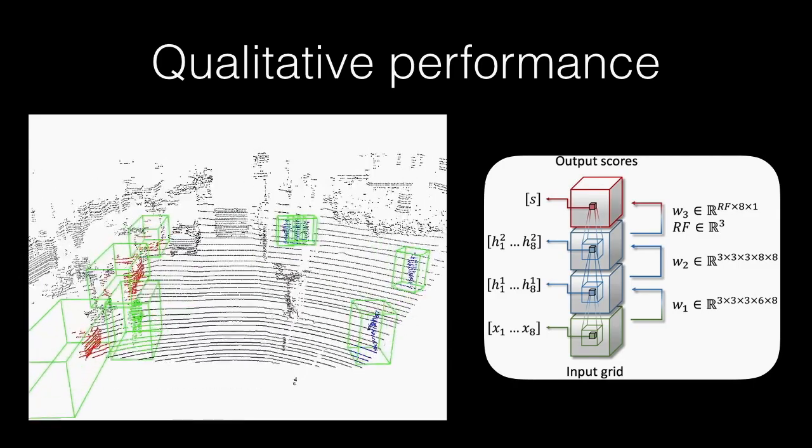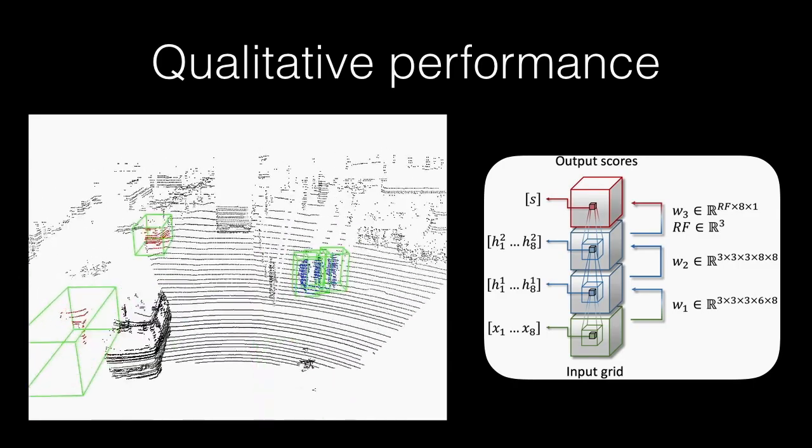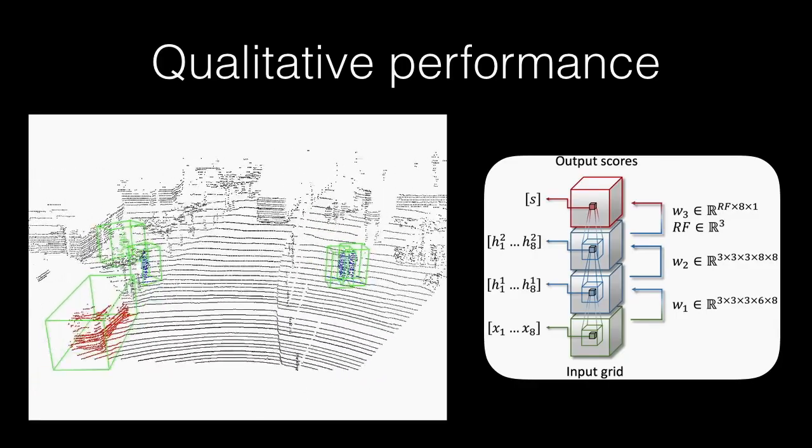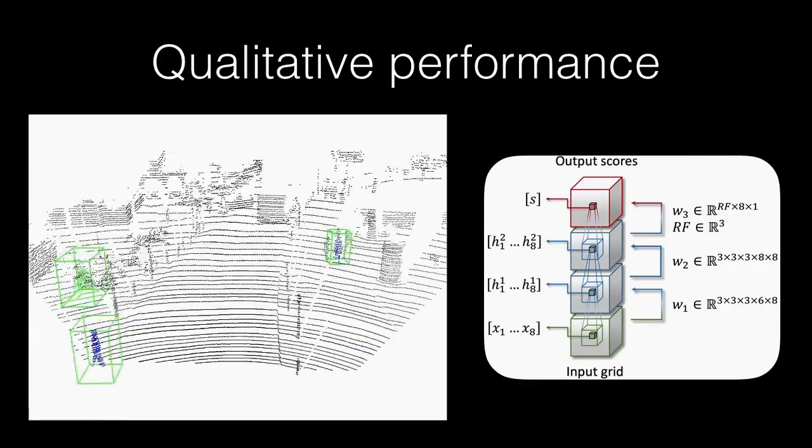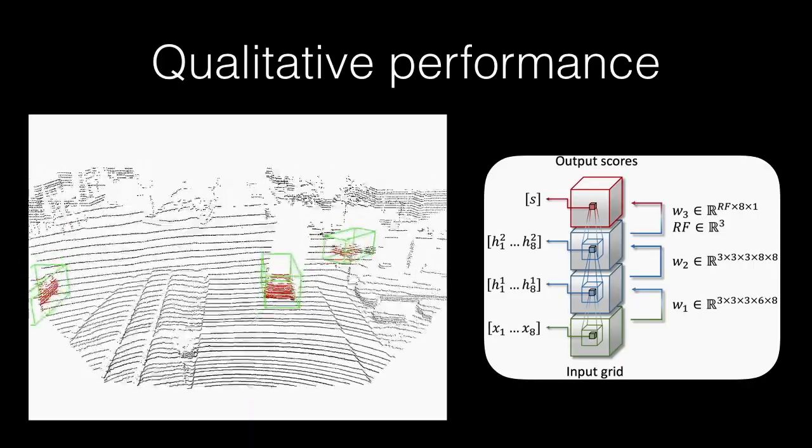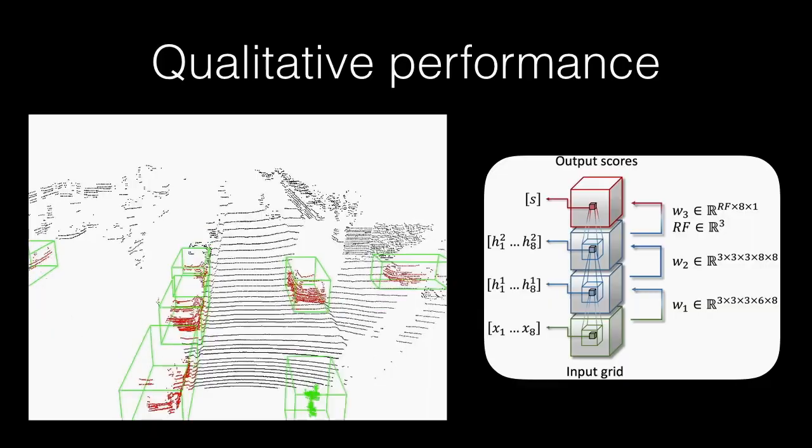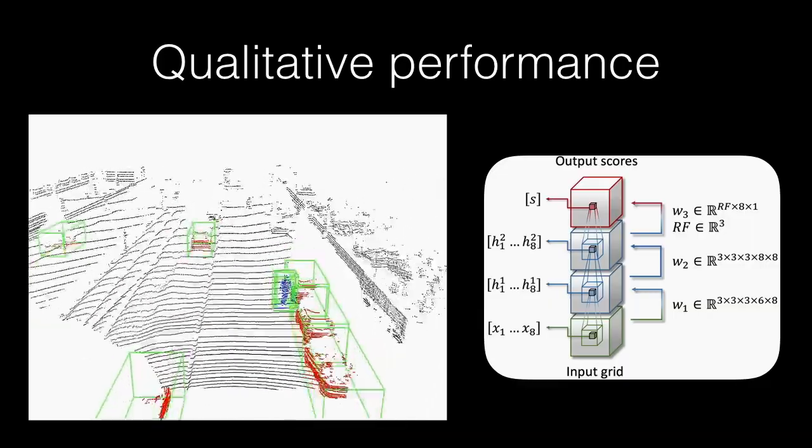The result is a novel approach called Vote3Deep for detecting objects natively in 3D with convolutional neural networks. Vote3Deep provides state-of-the-art performance on a publicly available dataset while remaining highly competitive in terms of processing speed.